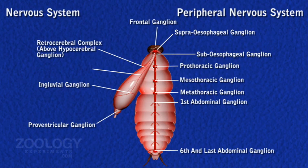Nerves from thoracic ganglia enter thoracic muscles, mainly those of wings and legs. The first five abdominal ganglia send nerves to the dorsal and ventral muscles of the body wall, spiracles, and heart. The last abdominal ganglion supplies nerves to muscles of the last three abdominal segments, reproductive organs, copulatory appendages, and anal cerci.